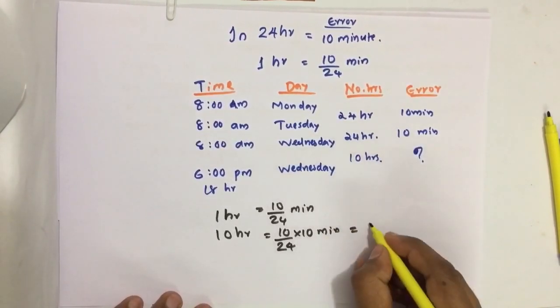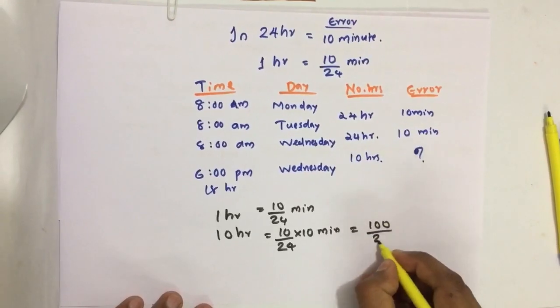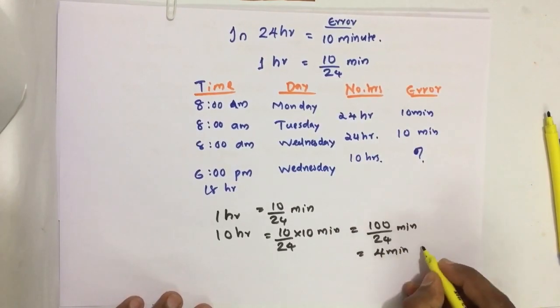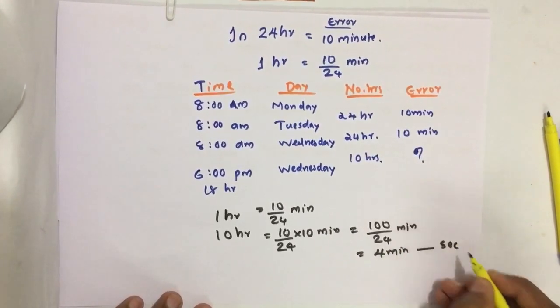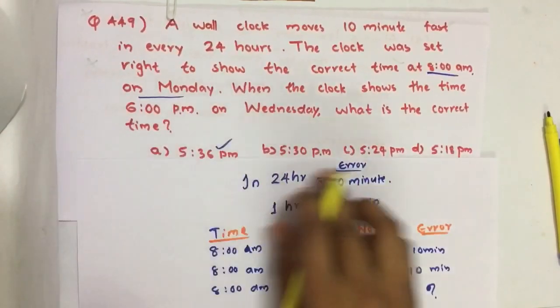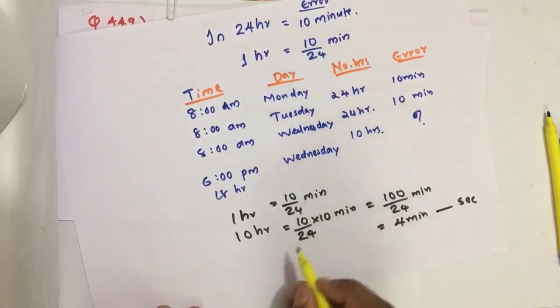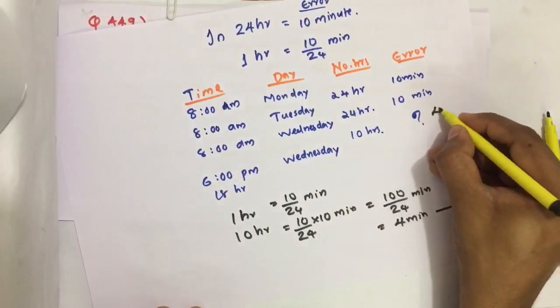This is equal to 100 divided by 24 minutes. This we can write as 4 minutes and some seconds. All our options are given in minutes, so no need to find the seconds. Therefore this is 4 minutes.